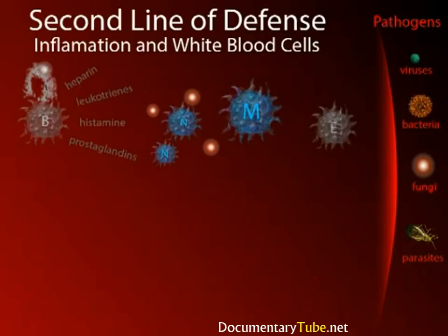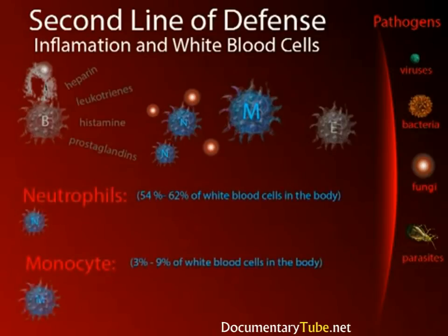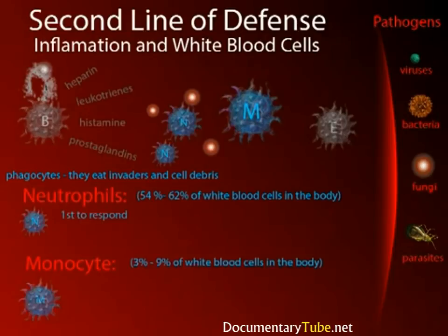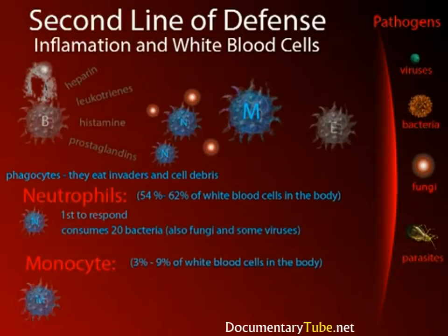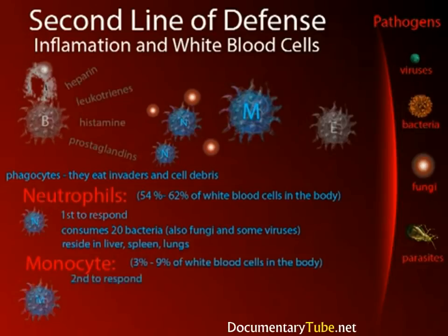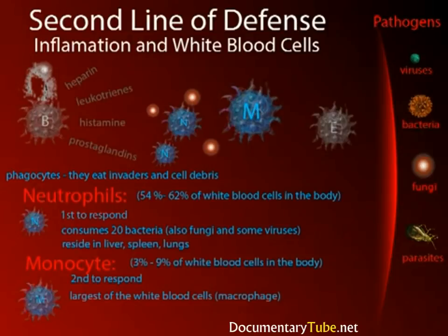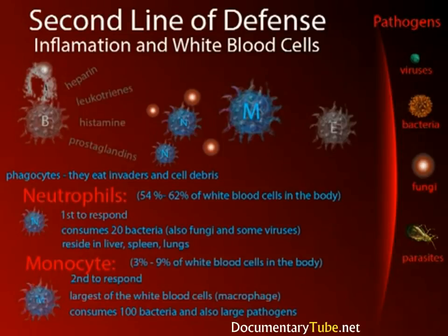Any bacterium or virus can potentially be attacked by white blood cells, so they are nonspecific. White blood cells generally have about a 12-hour lifespan and are produced in the bone marrow. The neutrophils and monocytes are phagocytes—they can eat other cells. Neutrophils are typically the first phagocytotic white cells to respond; they are not very large and can only consume about 20 bacteria before they reach the end of their lifespan, though they can also consume fungi and some viruses. They hang out in the liver, spleen, and lungs until needed. Monocytes are the larger phagocytotic white blood cells—the big eaters. Once they enter the tissues, they are called macrophages and can consume about 100 bacteria in their lifespan, also tackling large pathogens such as parasites.